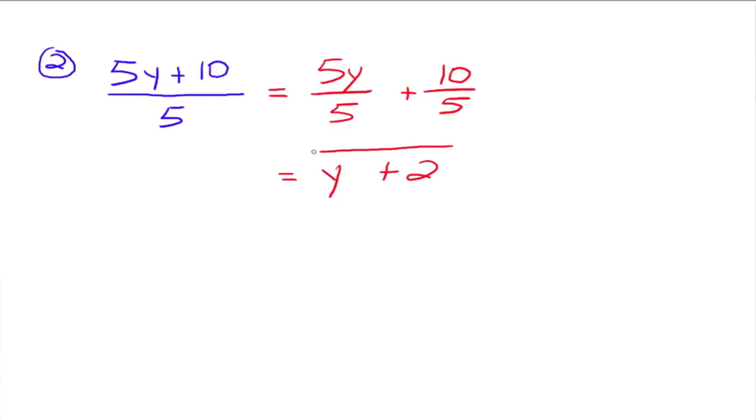Let's try this one. 5y plus 10, all of that divided by 5. So you have the polynomial 5y plus 10 divided by the monomial 5. So we can rewrite this as two fractions: 5y divided by 5 plus 10 divided by 5. And then just simplify each fraction. 5y divided by 5 goes to y. 10 divided by 5 goes to 2. So this simplifies down to y plus 2. That's how we're doing the division.